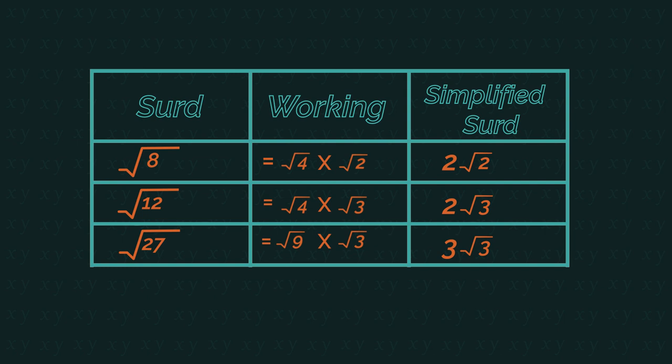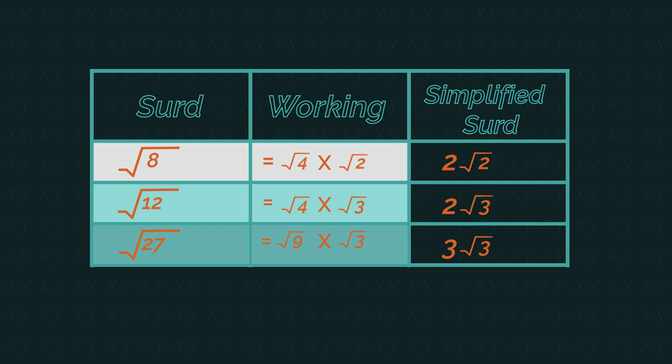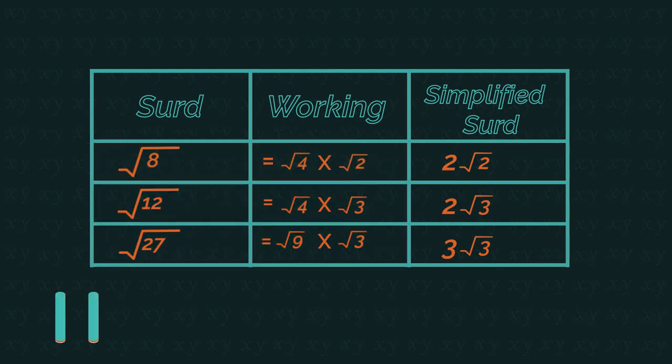Have a look at these simplified surds. How have they been simplified? Can you spot what is happening in the working column? How the working connects to the original surd? Pause the video, have a think and click play when you're ready.